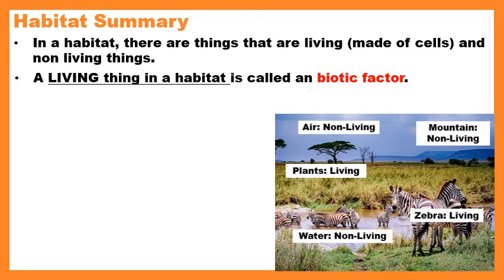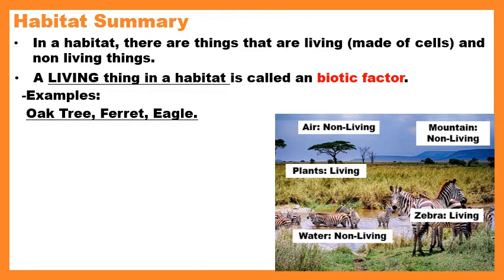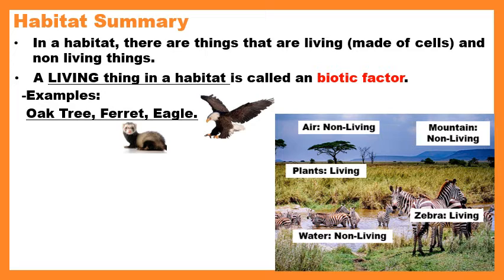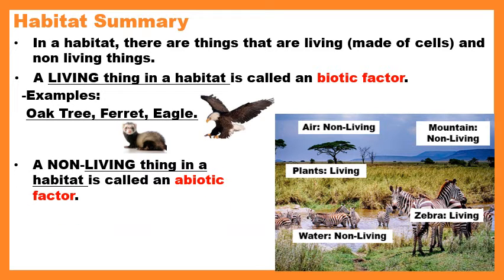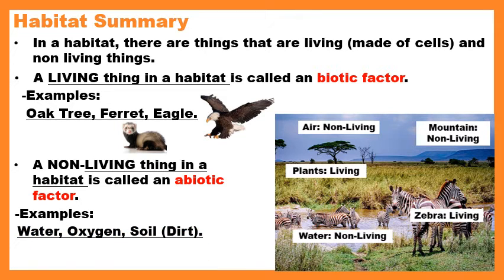A living thing in a habitat is called a biotic factor — think of the word 'biology,' where 'bio' means living. Examples of biotic factors include an oak tree, a ferret, and an eagle. Remember, plants are living even if we don't always think of them that way — they're made of cells. A non-living thing in a habitat is called an abiotic factor. Examples include water, oxygen, and soil. These things are not made of cells so they're non-living, but they're super important — we can't live without water, oxygen, or food, and most of our food is plants grown in soil.